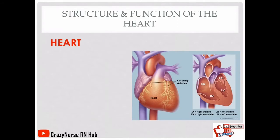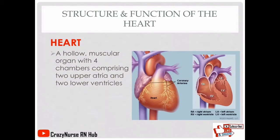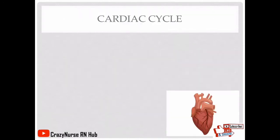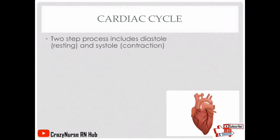We have the structure and function of the heart. The heart is a hollow muscular organ with four chambers comprising two upper atria and two lower ventricles. It pumps oxygenated blood to the body's cells. Now we have your cardiac cycle. We have two processes which includes diastole, which is the resting phase, and systole, which is the contraction phase.